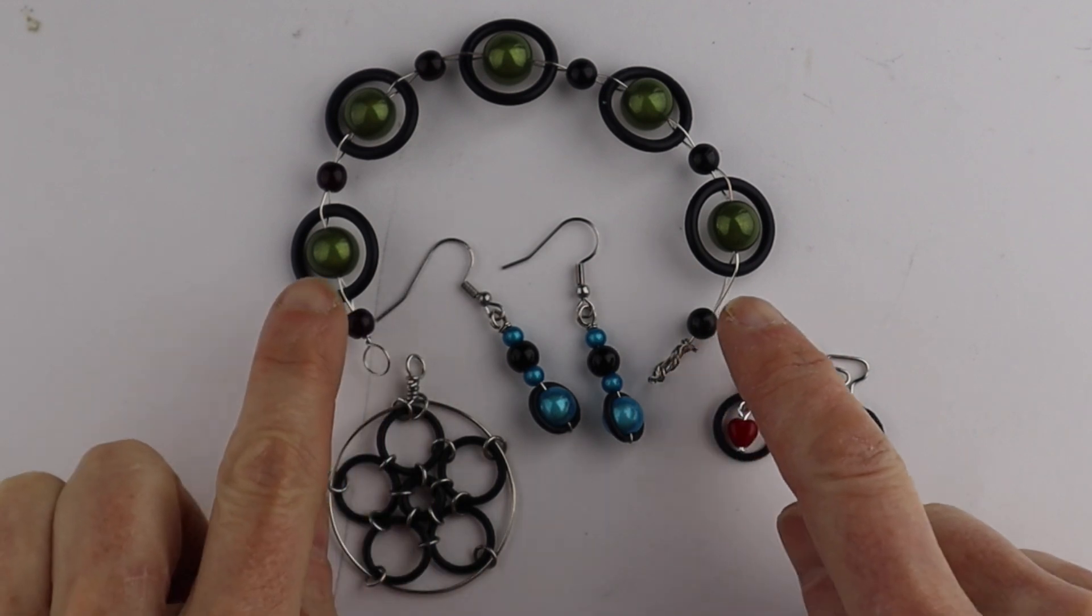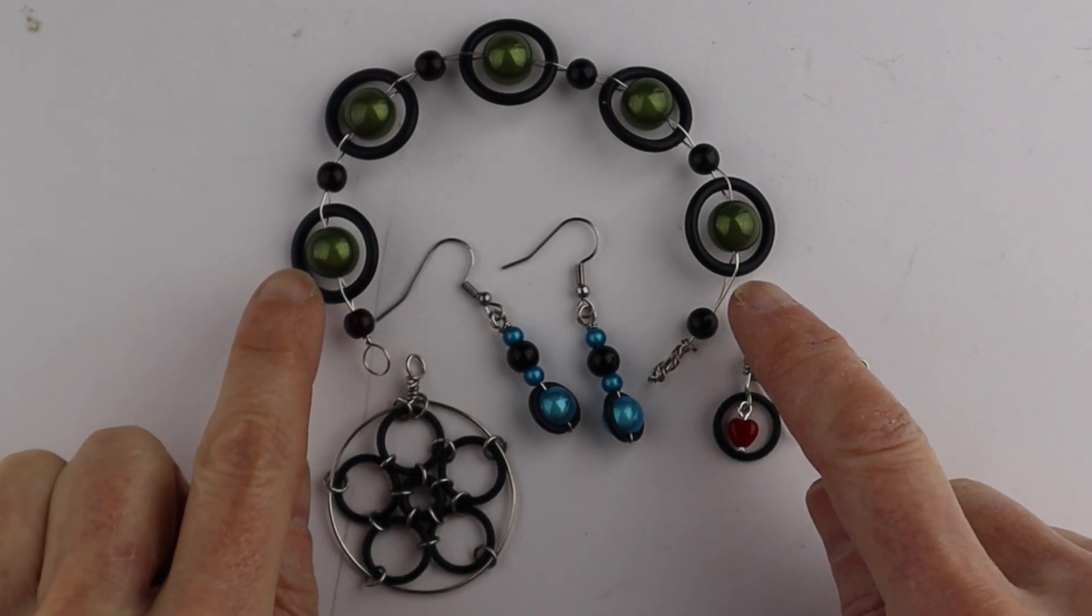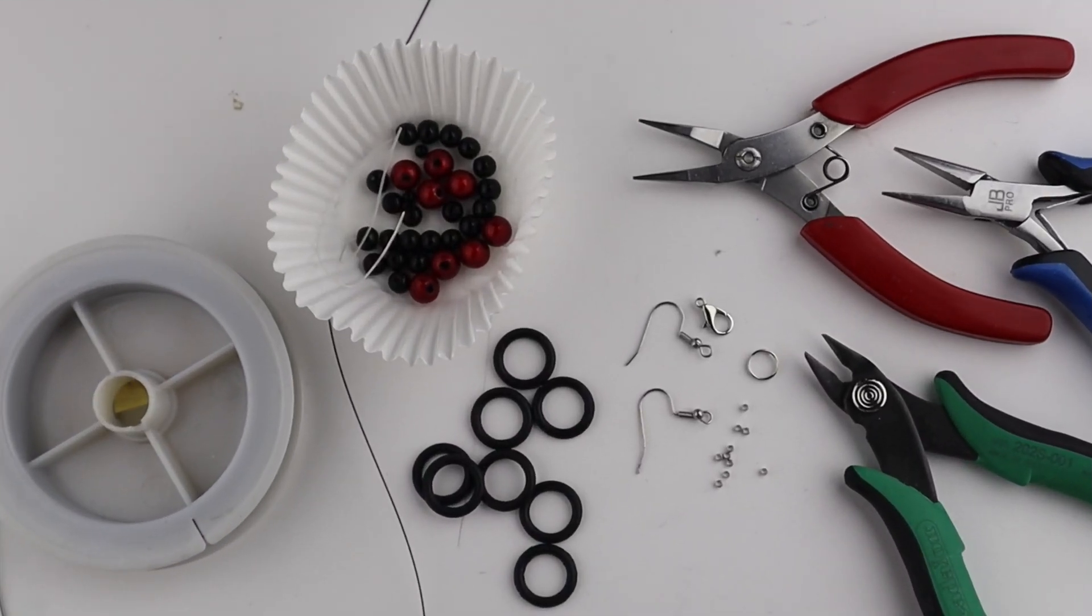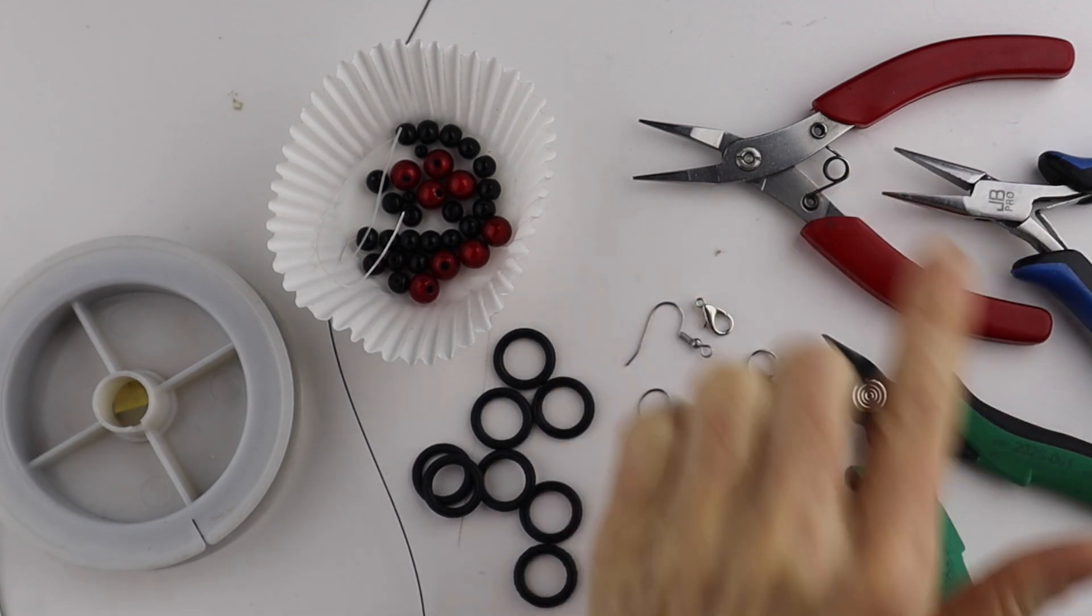Instead of the 24 gauge wire I used before, I'm going to be using Tiger Tail. For this project you'll need cutters, flat pliers, and round pliers.